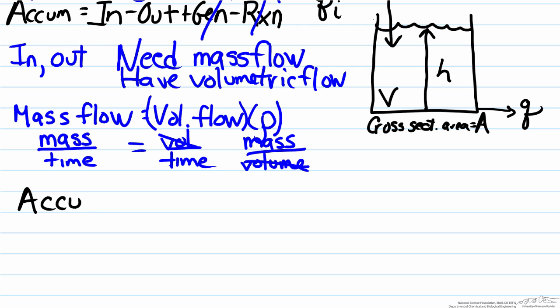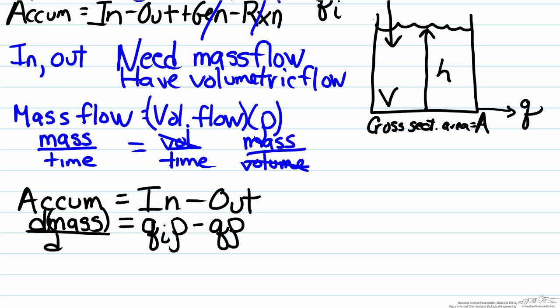Revisiting our mass balance, which is now simplified as accumulation equals in minus out, we can now find the in term and the out term. So the in term, our inlet flow rate is coming in at qi, and we have to multiply by rho. And what is now coming out is the volumetric flow rate out, q multiplied by rho, where our accumulation term is d mass dt.